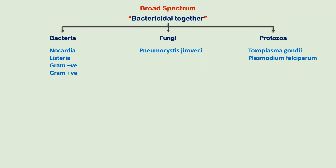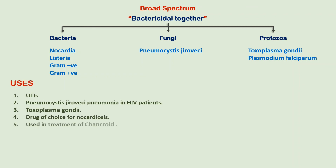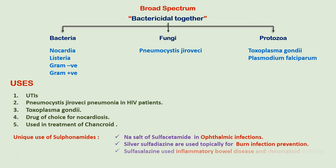In fungi, they have activity against Pneumocystis jirovecii, and in protozoa they have activity against Toxoplasma gondii and Plasmodium falciparum resistant to chloroquine. They are used in UTIs caused by gram-negative bacteria such as E. coli, Proteus, and Enterobacter species, and in HIV patients with Pneumocystis jirovecii infections. Unique uses include sodium sulfacetamide in ophthalmic infections, silver sulfadiazine or mafenide topically for burn infections, and sulfasalazine in inflammatory bowel disease and rheumatoid arthritis.